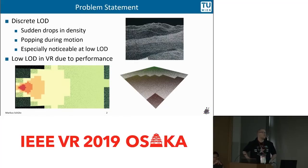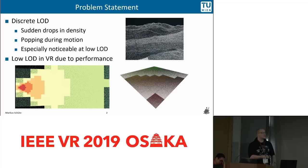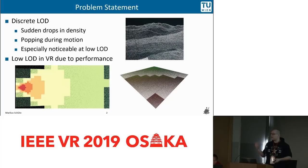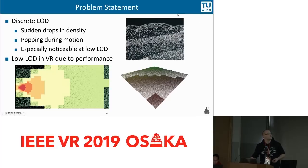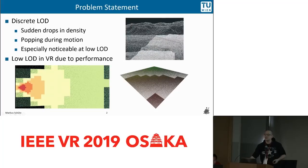The problem we are trying to solve is that state-of-the-art methods for point clouds use discrete level of detail structures, where you have a sudden and harsh transition of density as you go from one level of detail to the other. Here you can see a pretty good density and then all of a sudden a very low one. This is especially a big problem during motion, and in virtual reality because of the high performance requirements we have to render at a low level of detail. During motion, this can look like this — you get this popping of chunks of points.